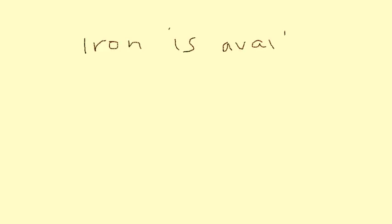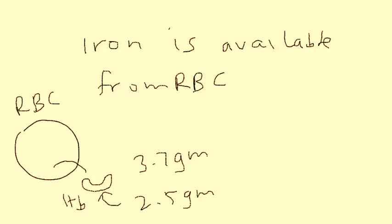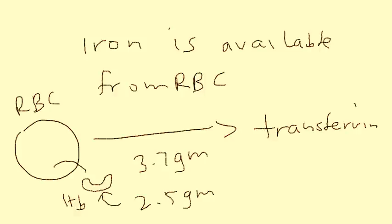When the body needs iron, it gets it from the storage form, but it can also get it from red blood cells. Of the 3.5 grams of iron in our body, 2.5 grams are inside hemoglobin. So when red blood cells start to die — aging red blood cells — transferrin grasps those iron molecules and transports them throughout the body.